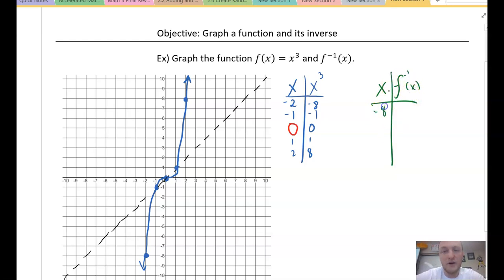Now what I want to do is I want to go ahead and plot the inverse of this. So, here's x. Here is f inverse of x. And, again, all we do, how do you find an inverse? You switch x and y. It's written on the whiteboard right behind me. So, (-8,-2), (-1,-1), (0,0), (1,1), and (8,2).